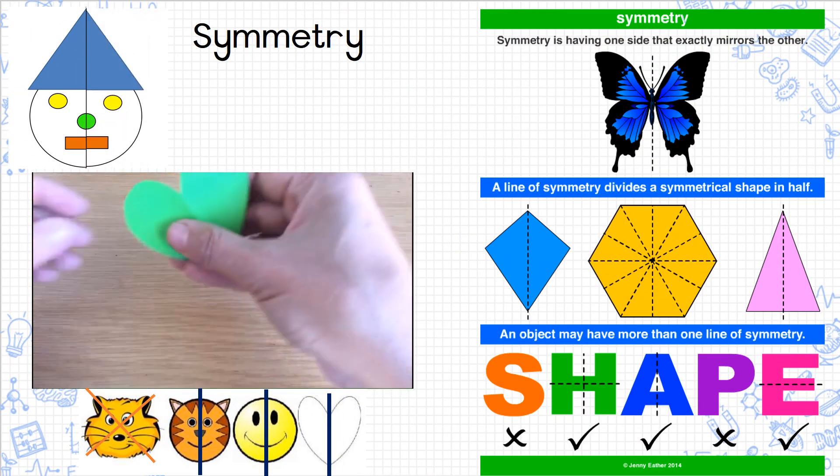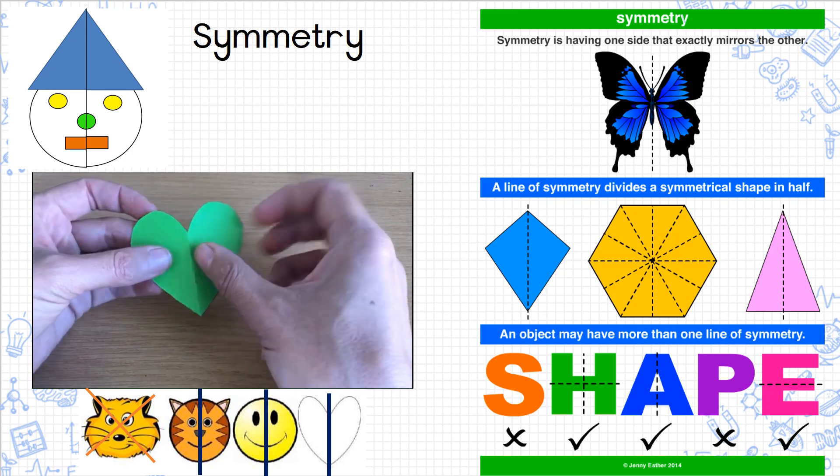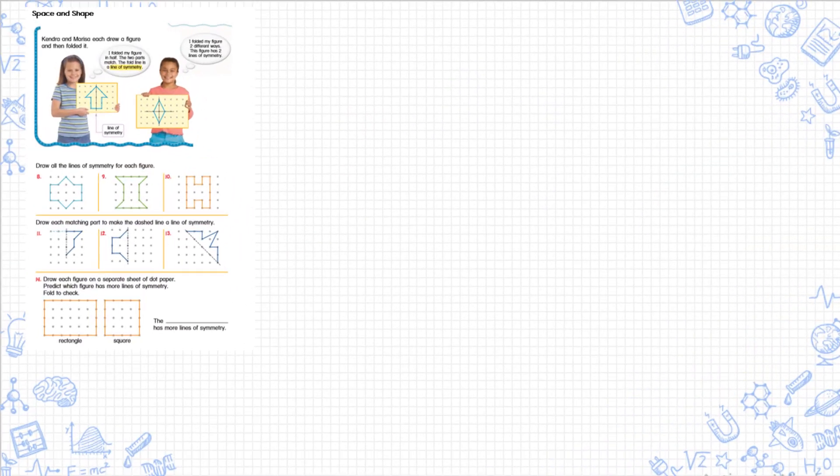When I take a shape, I want you to go draw the line of symmetry. Then you have to draw the other half of this picture. Lastly, you have to tell me: does a rectangle or square have more lines of symmetry? Here are a few practical things if you can go and practice with symmetry.